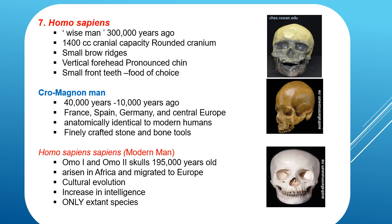Cro-Magnon man had developed culture and used finely crafted stone and bone tools. Their fossils have been recovered from France, Spain, Germany, and Central Europe, and they are assumed to have lived from about 40,000 years ago, being anatomically identical to modern humans. Homo sapiens sapiens, or the modern man, arose in Africa, migrated to Europe, and established itself across different parts of the globe. Evolution of the modern man is marked more by an increase in intelligence and cultural evolution. Homo sapiens sapiens is the only surviving species of the Homo genus. Two skulls — Omo 1 and Omo 2 — are the oldest specimens of modern man, dated to about 195,000 years old.